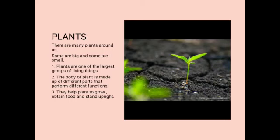Topic: Plants. There are many plants around us. Some are big and some are small. Kethe humare aas paas mein bohut sare plants hain, kuch big hain aur kuch plants small hain. Plants are one of the largest groups of living things. Living things kya hoti hain — they grow, they need food and water, they breathe to live. The body of a plant is made up of different parts that perform different functions. Kethe joh plant ki body hoti hain, woh different parts se bani hoti hain aur different functions ko perform kerti hain. They help the plant to grow, obtain food and stand upright.